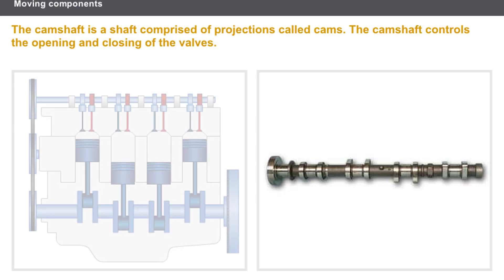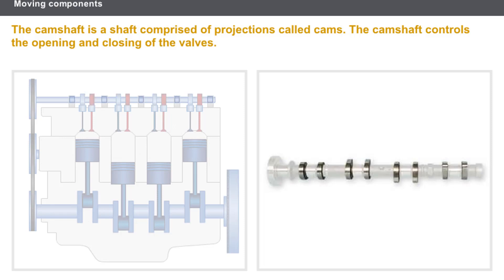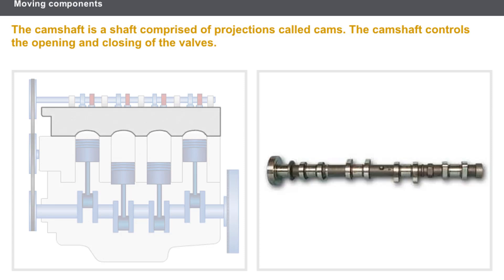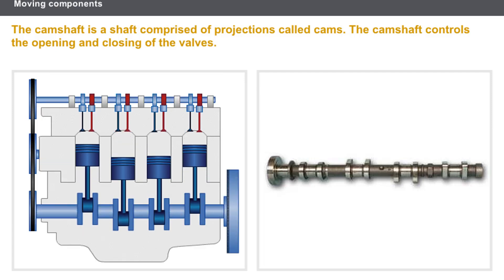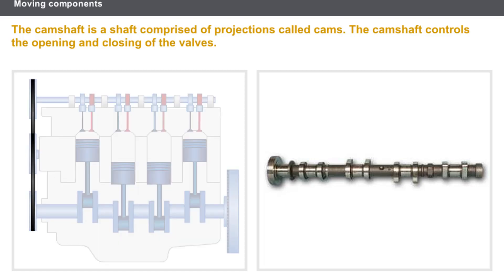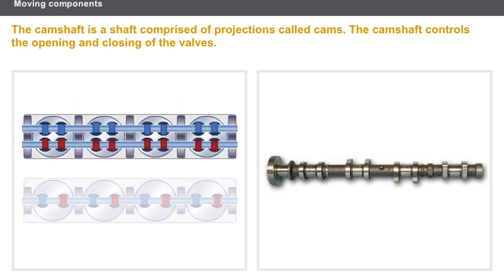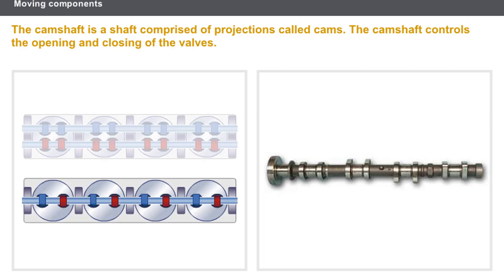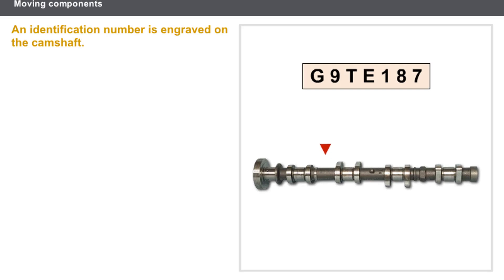The camshaft is a shaft comprising projections made of treated steel called cams, and some bearings that have been subjected to mechanical treatment to prolong their lifespan. The camshaft is usually fitted on the cylinder head, and sometimes on the rocker cover. It controls the opening and closing of the valves. The crankshaft drives the cams in a rotary movement via the valve timing components. If there are two camshafts, the first controls the inlet valves and the second controls the exhaust valves. The opening and closing of the valves is synchronized to the movement of the crankshaft — this is the valve timing setting.